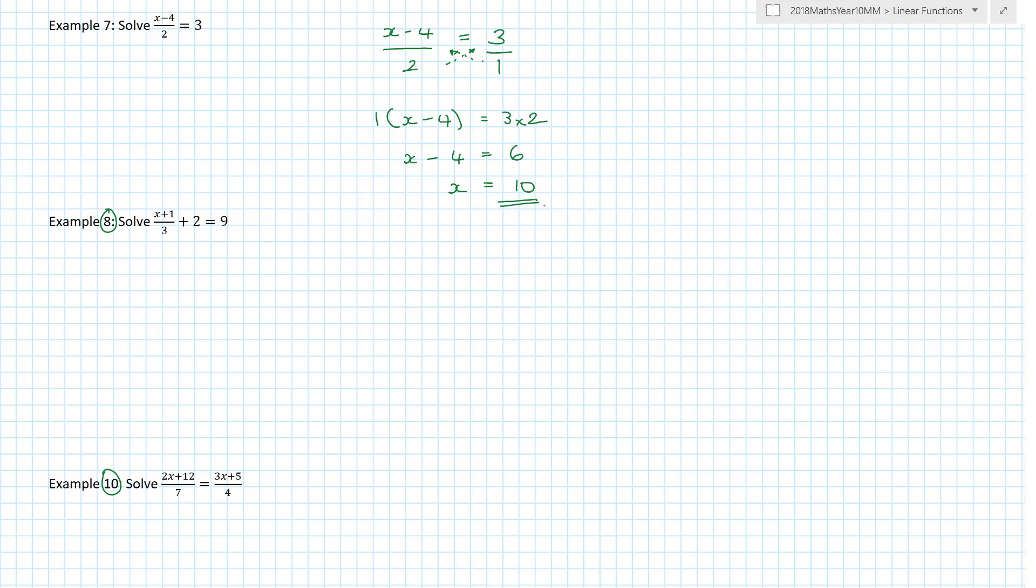There's lots of different ways of doing this. What am I trying to get on its own? The x. A lot of people say, can I move the minus 4 over? I try to imagine this like a set of bunk beds. You cannot let the people off the top bunk before the people on the bottom bunk get off first. People get treaded on and crying and all sorts.